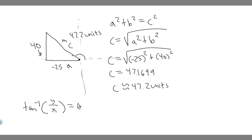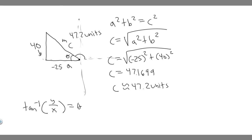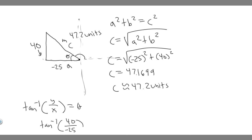Theta is this angle right here. If we know this angle, we can solve for the full direction angle. Now, the arc tangent only works on one side of the graph — if the triangle is on the other side, it just gives you the reference angle, so you have to subtract it from 180. So you do arc tangent of y over x, which is arc tangent of 40 over minus 25 — you have to include the negative sign. When you compute arc tangent of 40 divided by minus 25, you get minus 57.99, which is basically minus 58 degrees.